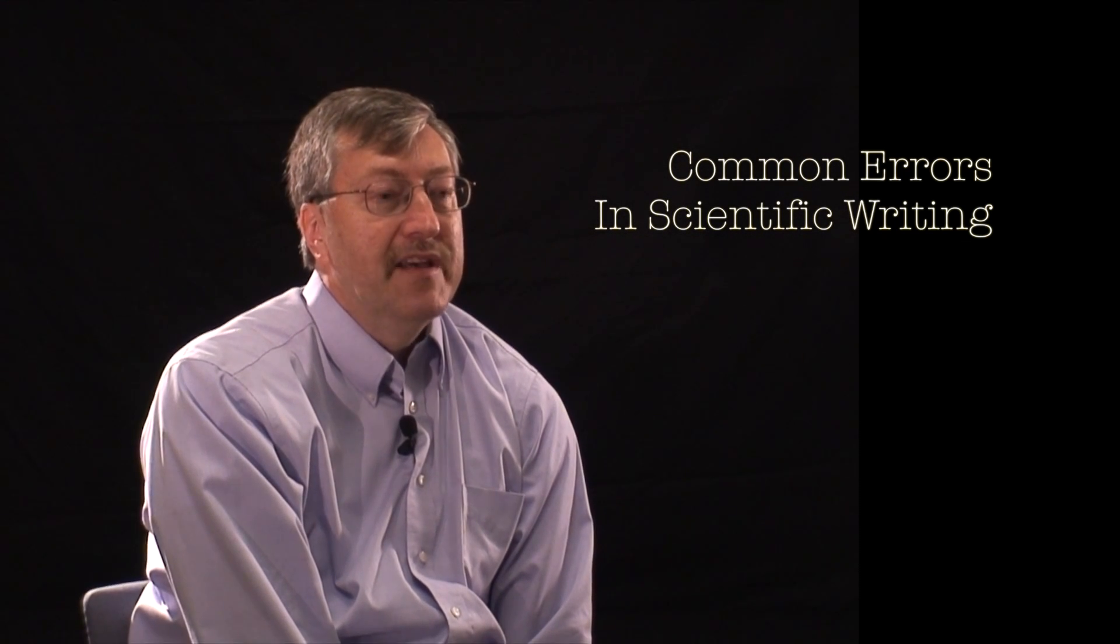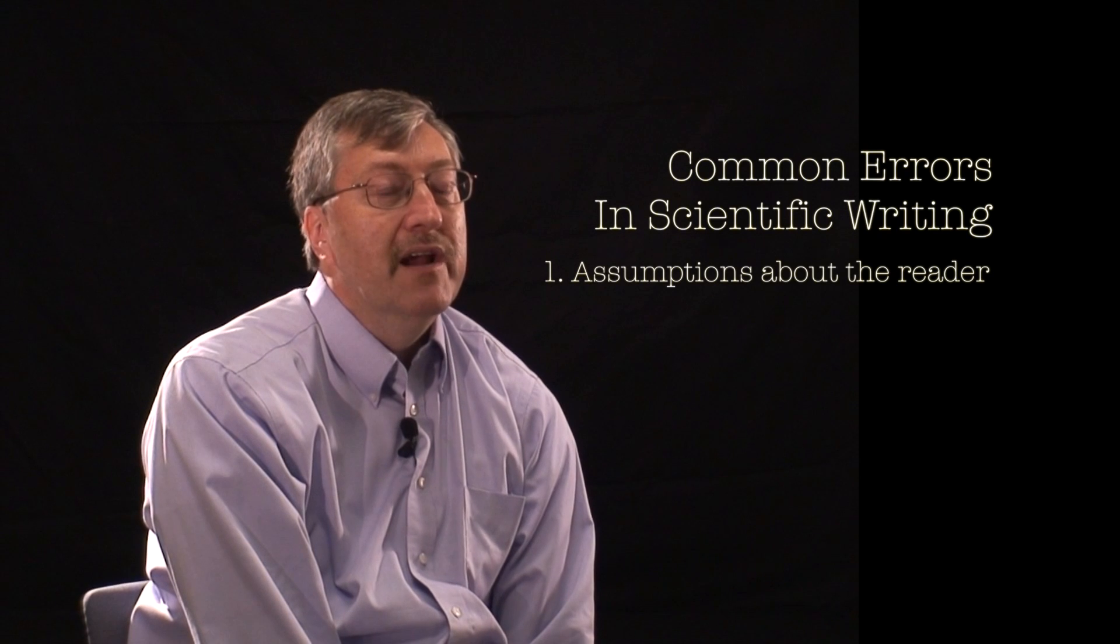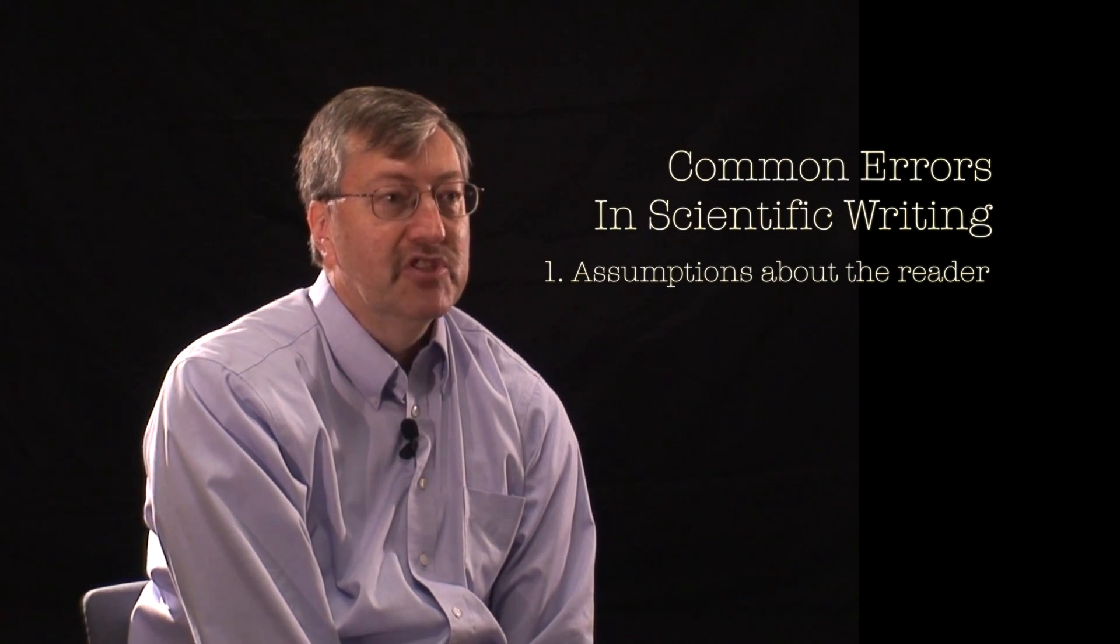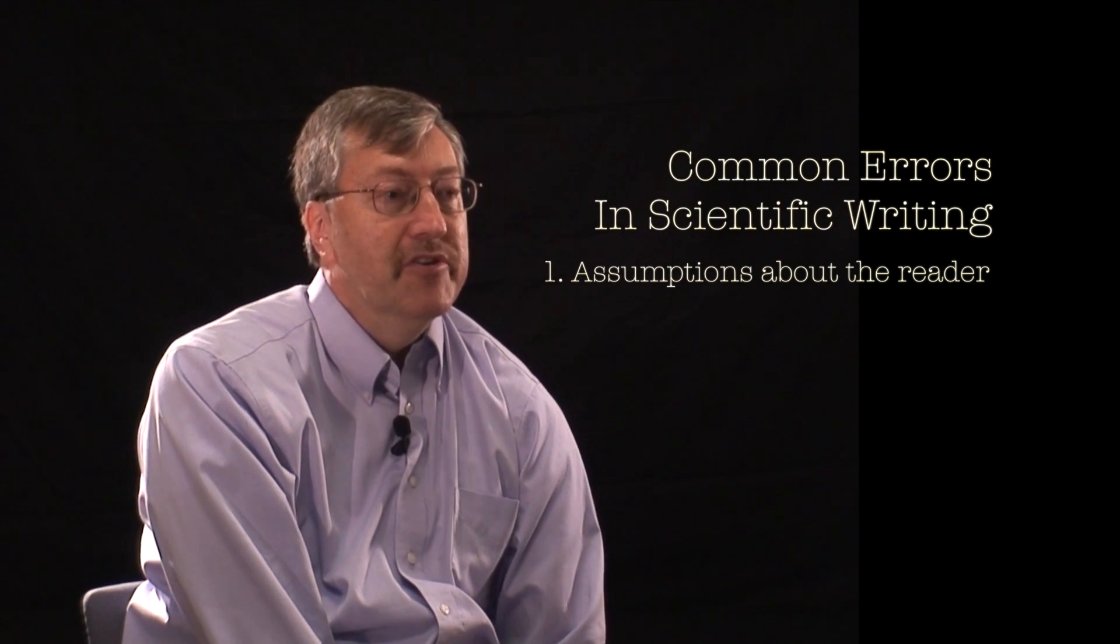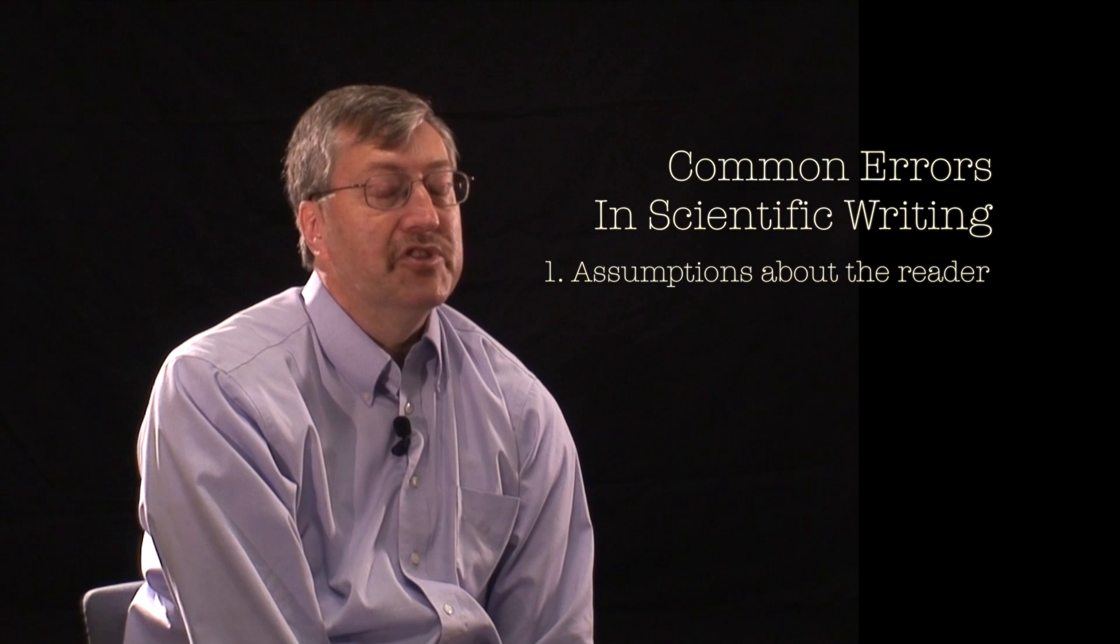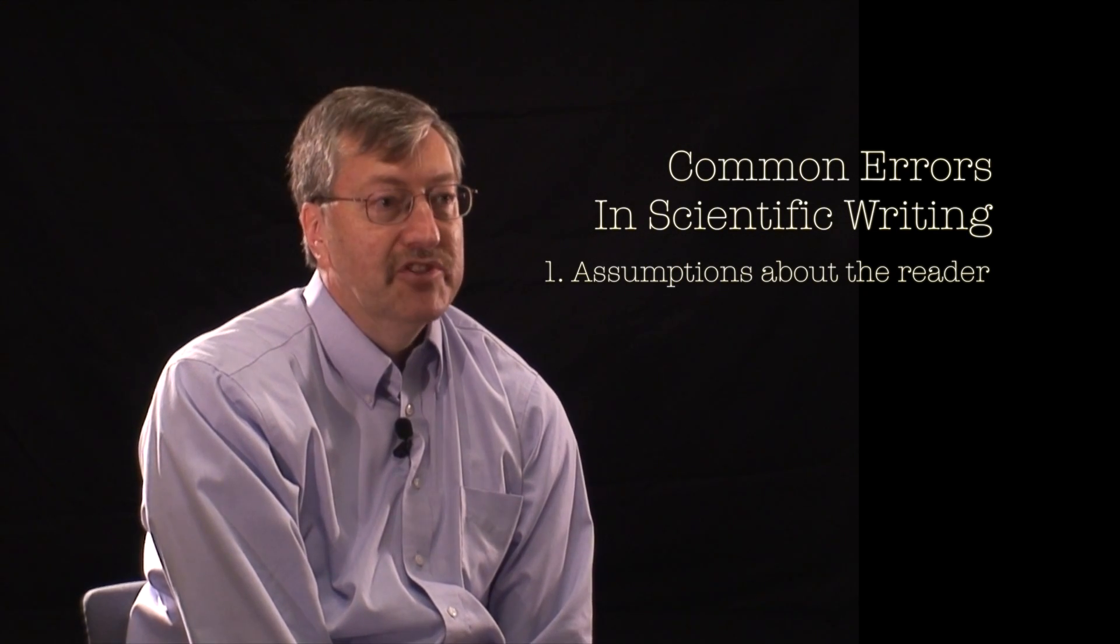One mistake that authors make is that they automatically assume that the reader understands everything they're trying to say within a paper. It becomes so self-obvious to the author that they don't realize that the terms they use, the way they present their data, their results, and the way they discuss their results may not be that obvious to the reader.